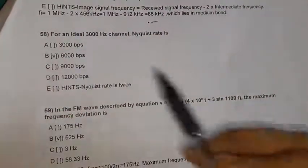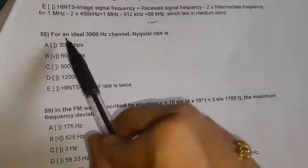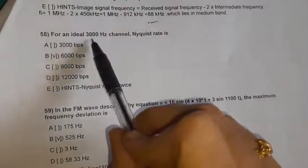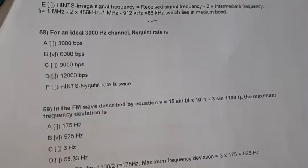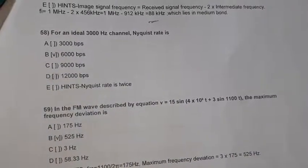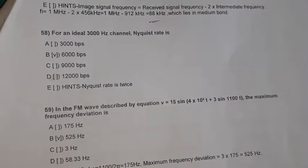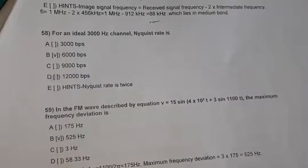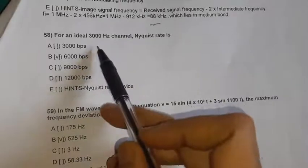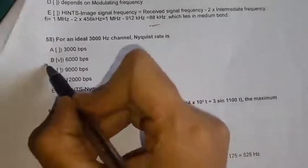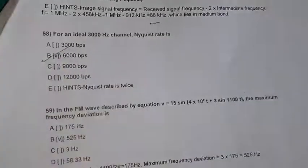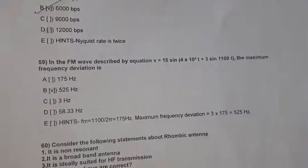Question 58: For an ideal 3000 Hz channel, the Nyquist rate is twice the bandwidth — 3000 into 2 equals 6000 bps. Option B is the right option.